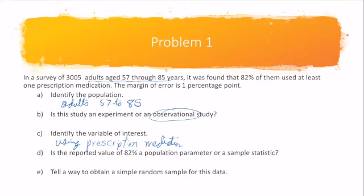For part D, it asks: is the reported value of 82% a population parameter or a sample statistic? Well, we got this 82% from our sample, so it is going to be a sample statistic. Remember, we could use our margin of error to define a range for the population parameter.